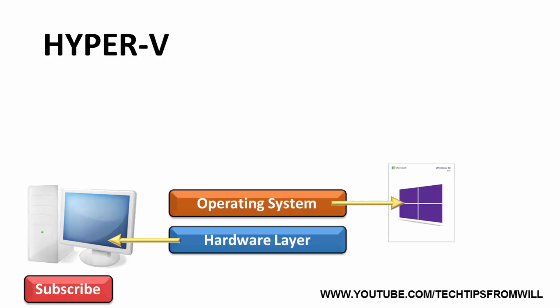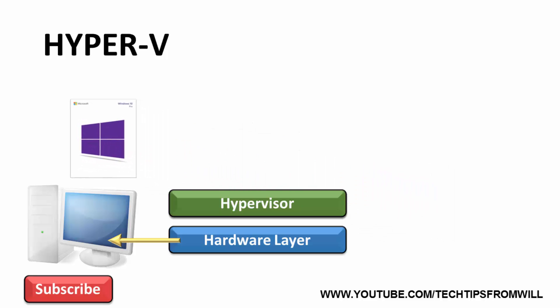When Hyper-V is installed on a Windows 10 computer, two things happen. First, when the hypervisor is created, it actually takes the place of the operating system. In other words, the hypervisor is actually placed on top of the hardware layer, not the operating system layer. So what exactly has happened to the Windows 10 operating system? After creating the hypervisor, the Windows 10 operating system is converted into something of a virtual machine itself and sits on top of the hypervisor.